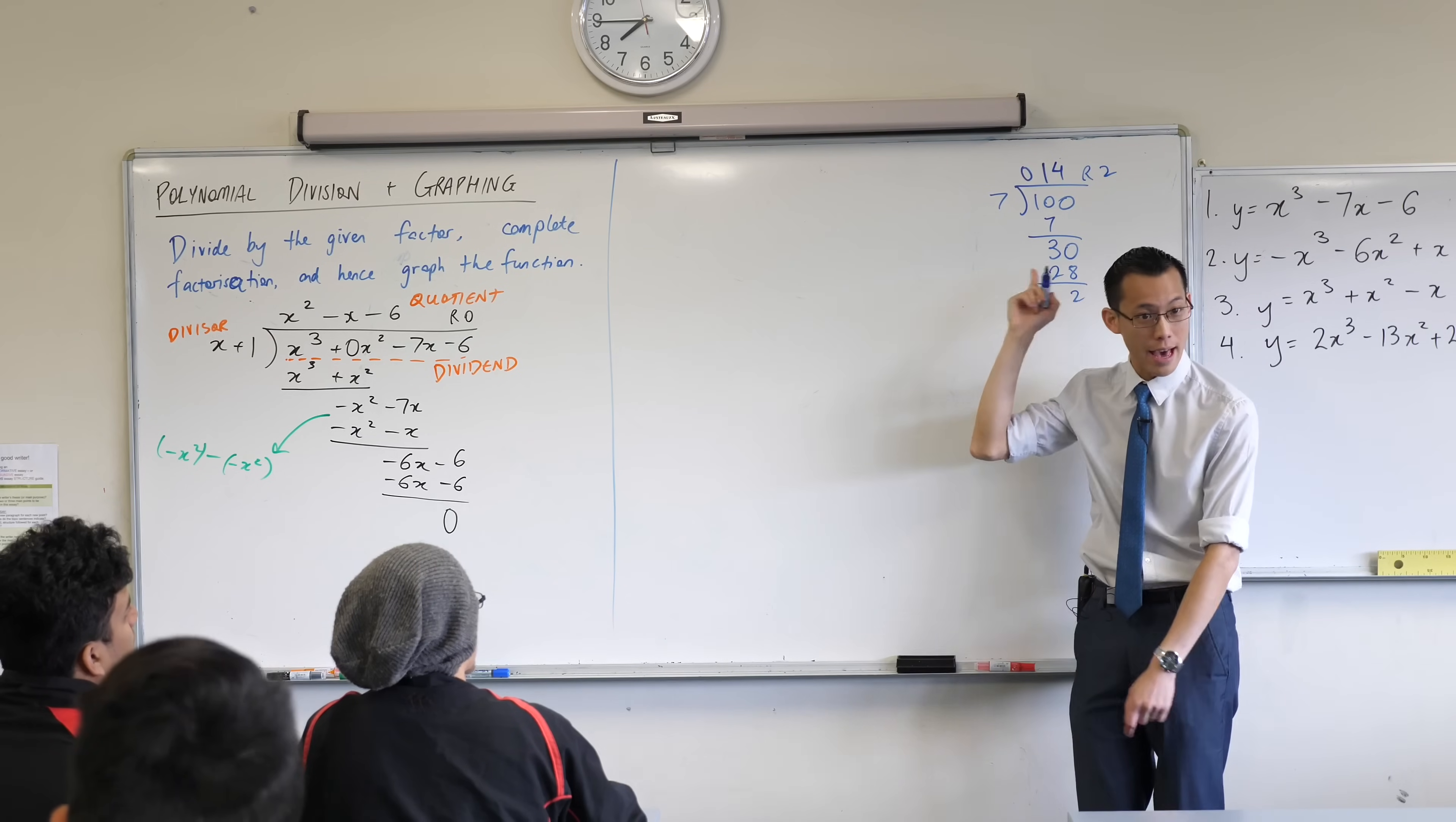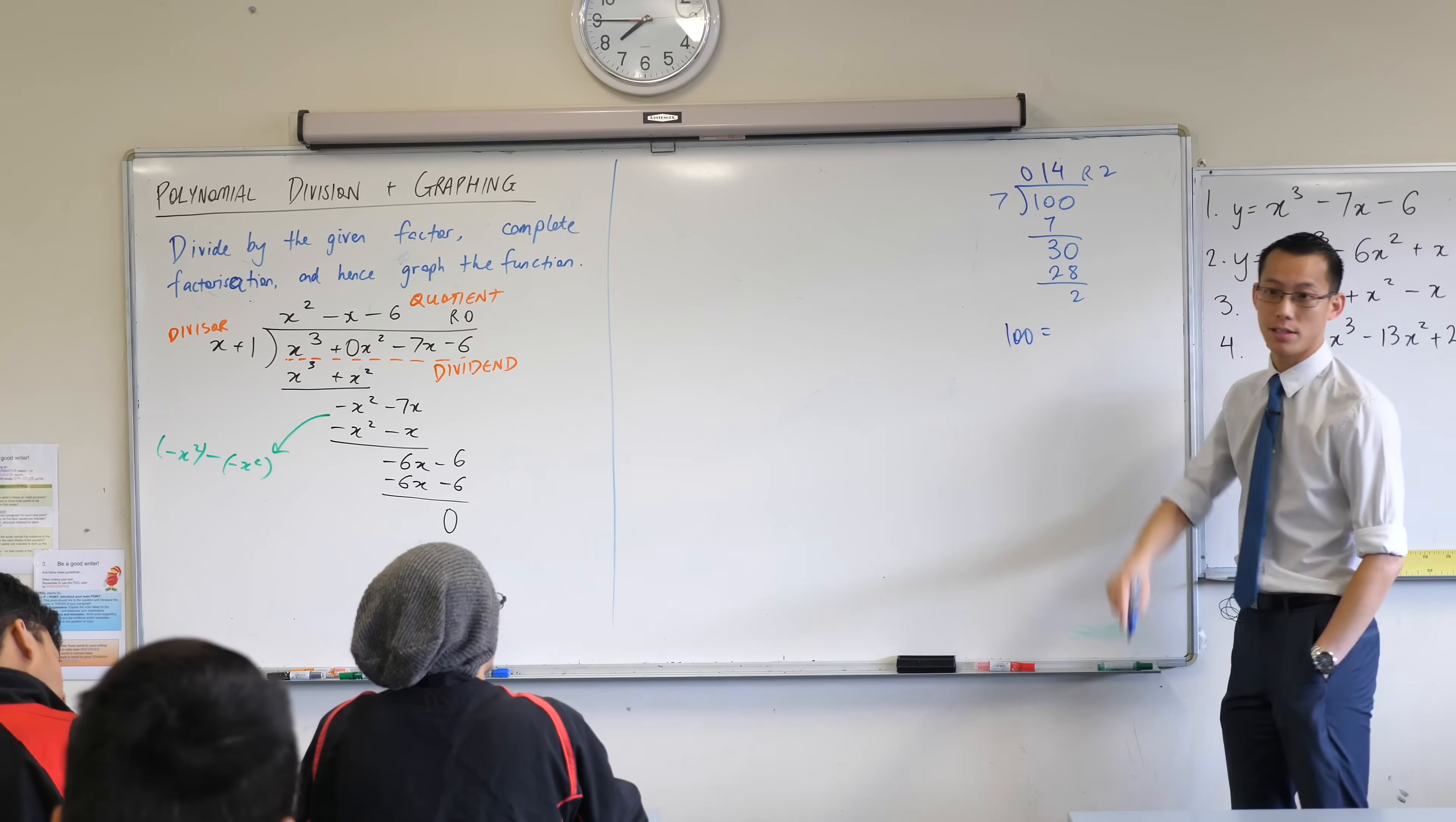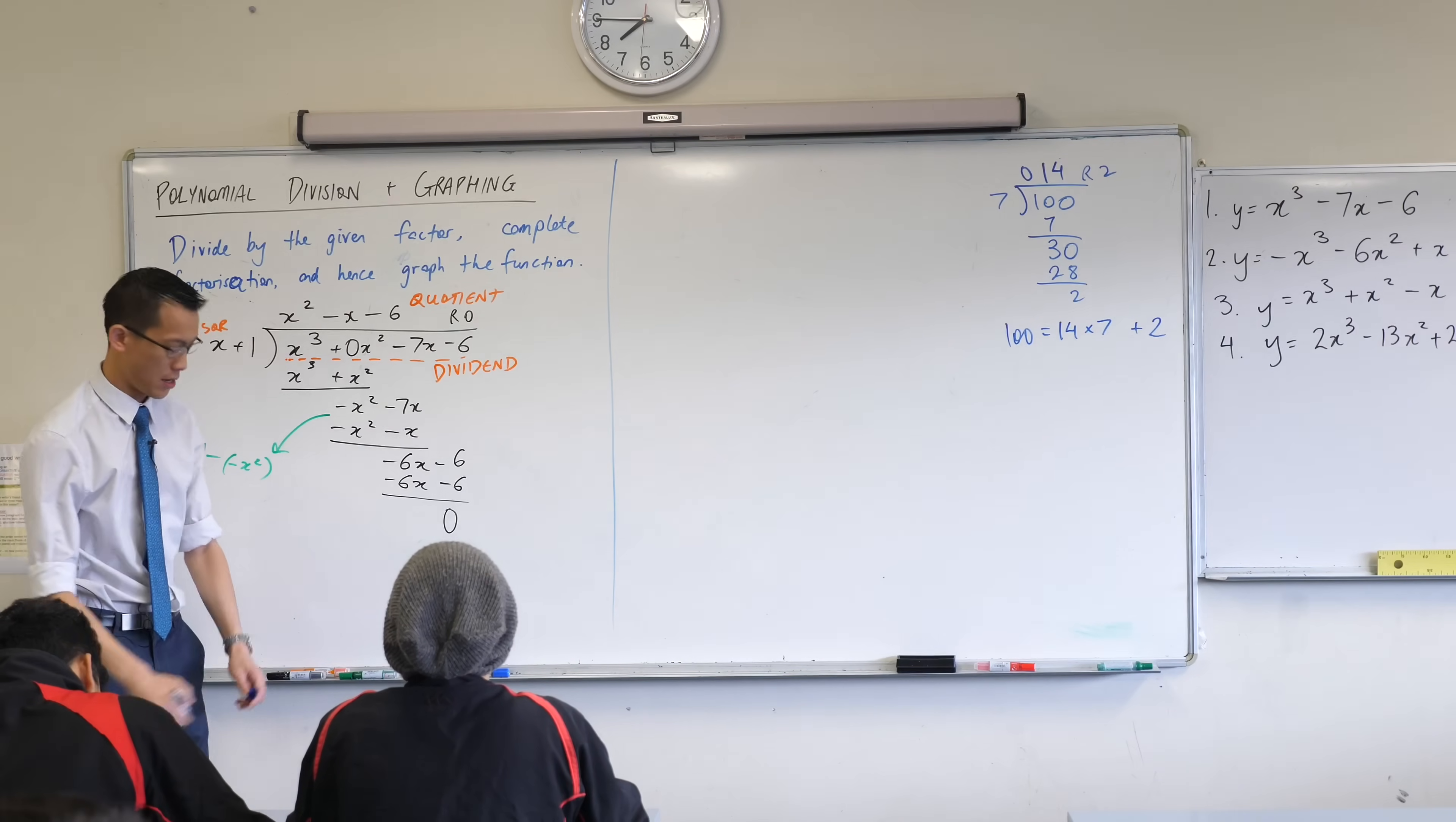Now, the reason why I'm going through that is because we can make a statement out of this. This is about division, but I can make a statement about multiplication. It's going to be very useful for my polynomial over here. The statement about multiplication, maybe you remember it is, 100, you can write it as how many lots of seven? Fourteen of them, right? Fourteen lots of seven, and then there's also a remainder hanging around. Remember that?